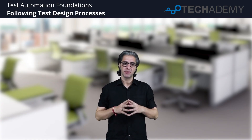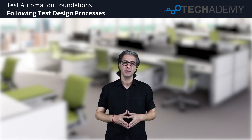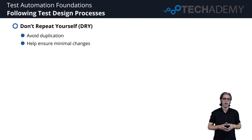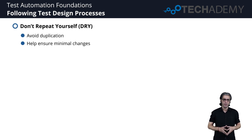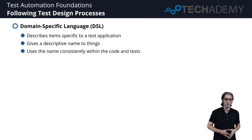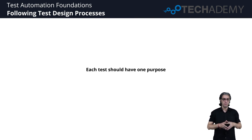Hi everybody and welcome to the session on following test design patterns. The software development community has evolved design principles and patterns that help reduce the cost of writing and maintaining automated test scripts. Key principles include 'Don't Repeat Yourself' (DRY), which helps avoid duplication — ensuring that when something changes in the system under test, only one test component needs to be updated. DRY allows test code to be shared and reused. A Domain Specific Language (DSL) describes items particular to a test application — use descriptive names consistently both within code and the test application.